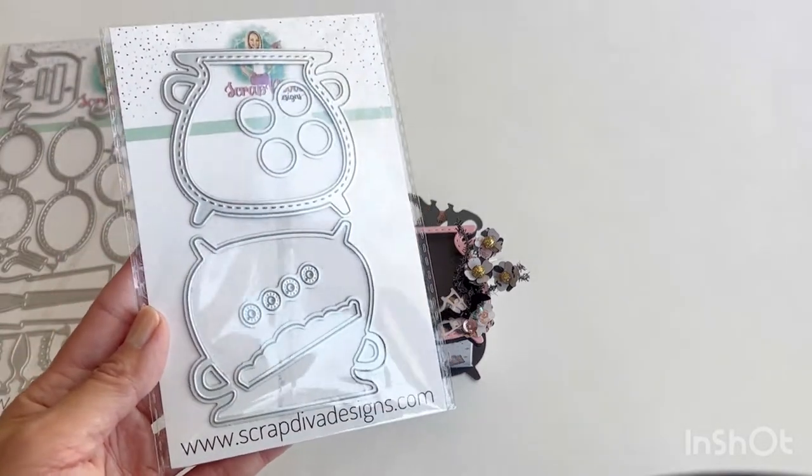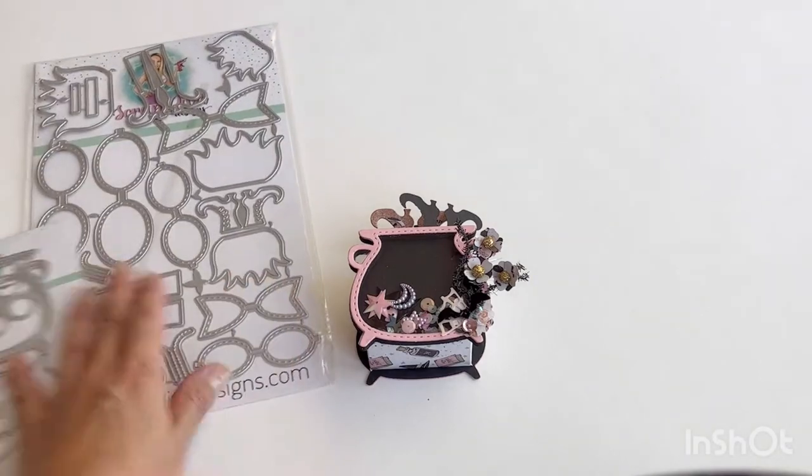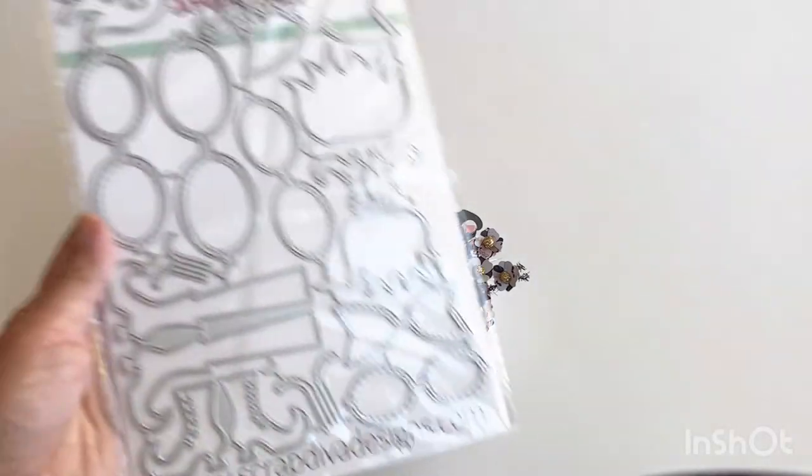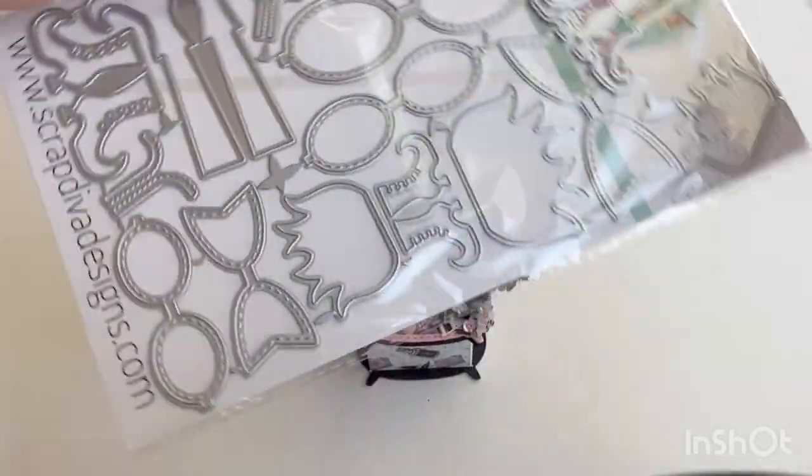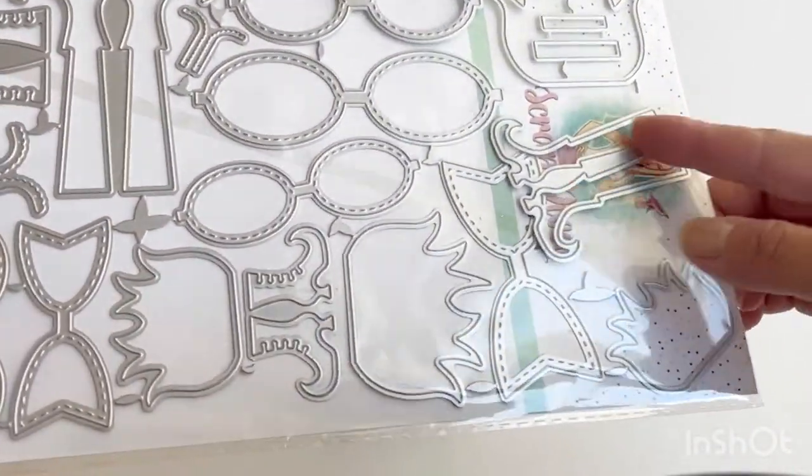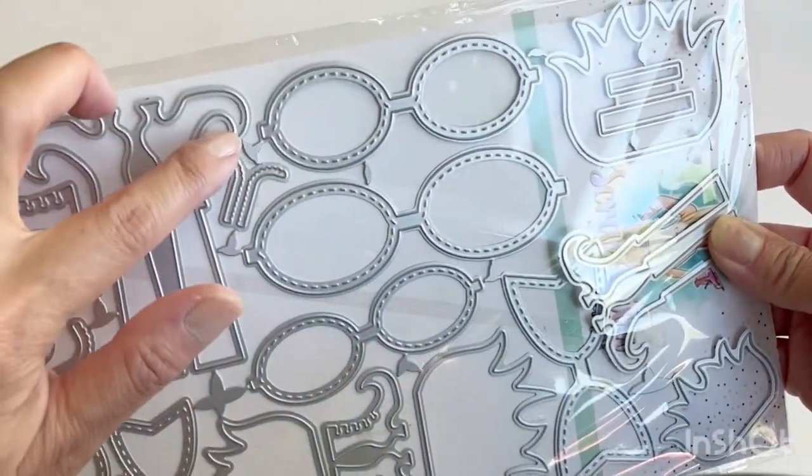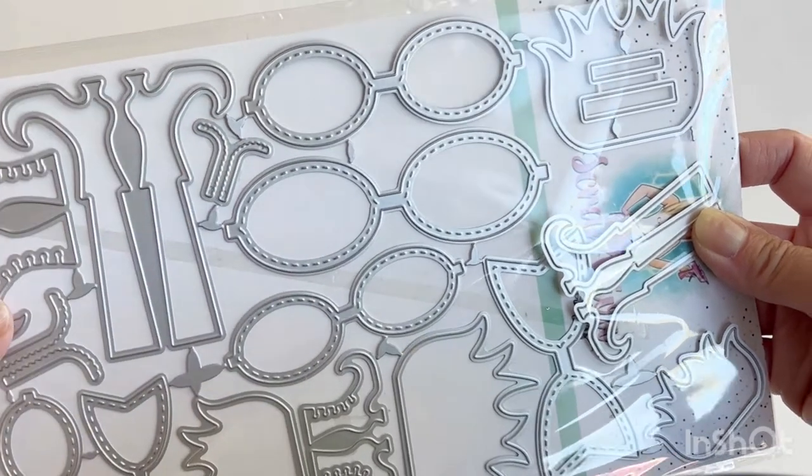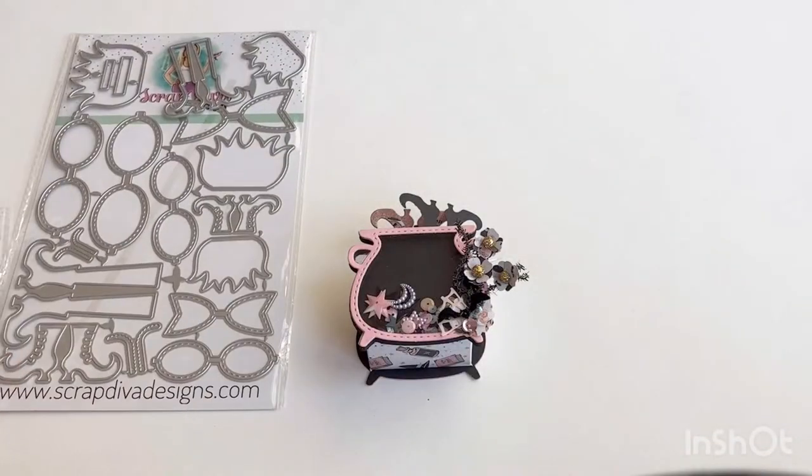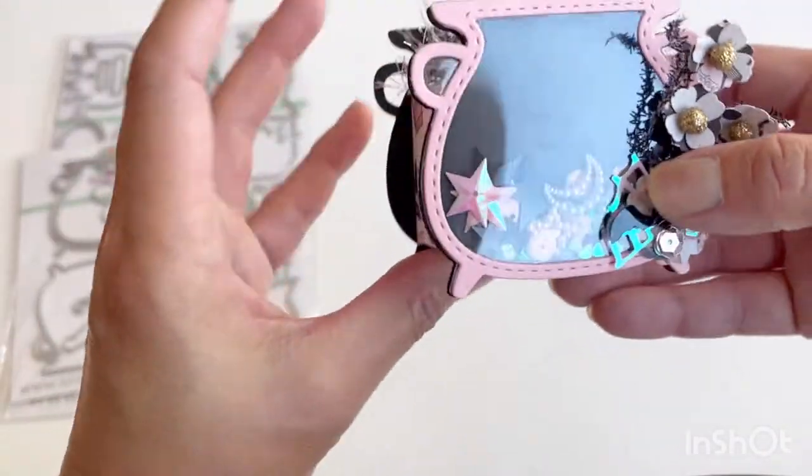It is this Cauldron Shaker die set and this witch boot die set. The two dies that I use are the set of witch feet, this layering piece for the boots. You can also use this part for the detail of the boot. Let me just show you my project real quick.